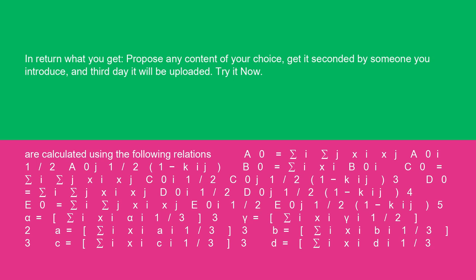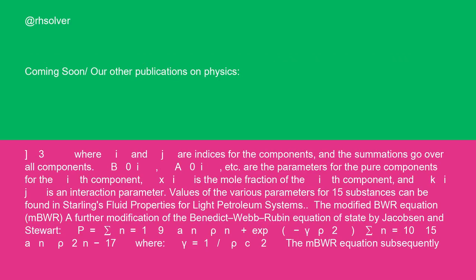Where i and j are indices for the components, and the summations go over all components. B0i, A0i, etc. are the parameters for the pure components for the ith component. xi is the mole fraction of the ith component, and kij is an interaction parameter. Values of the various parameters for 15 substances can be found in Starling's Fluid Properties for Light Petroleum Systems.